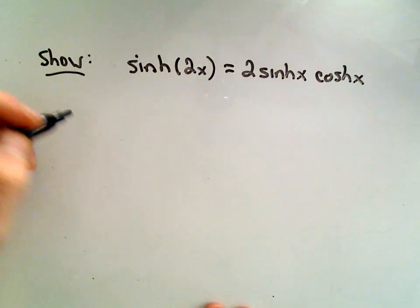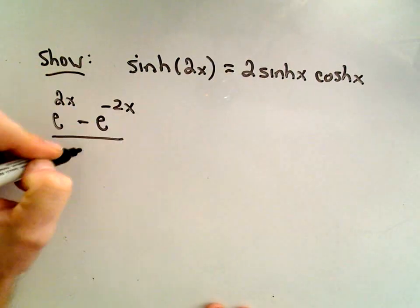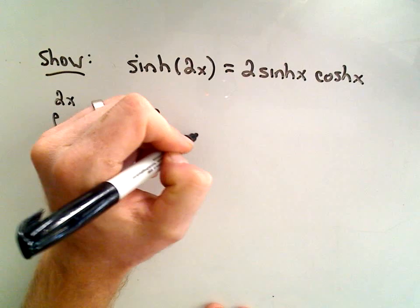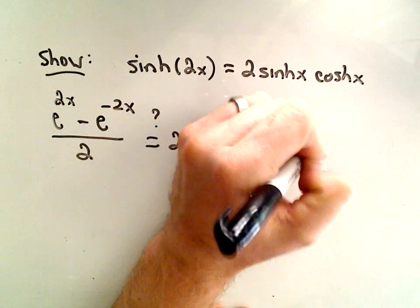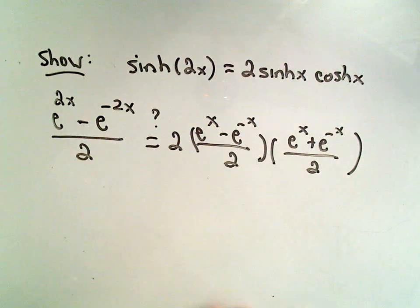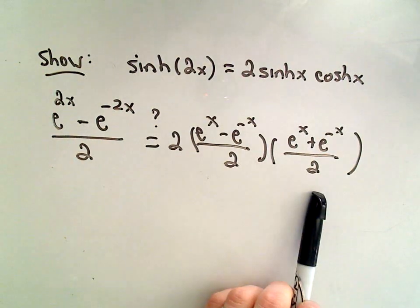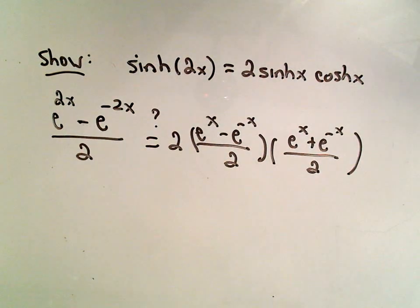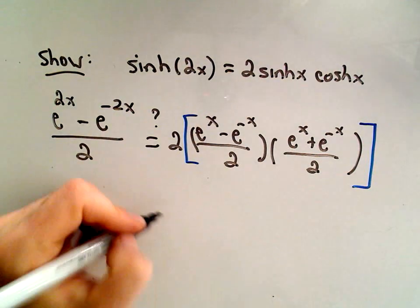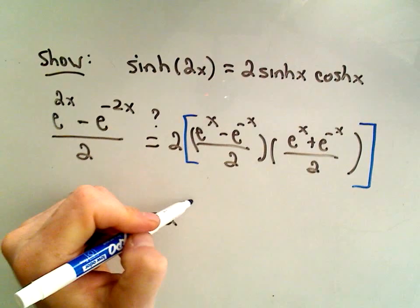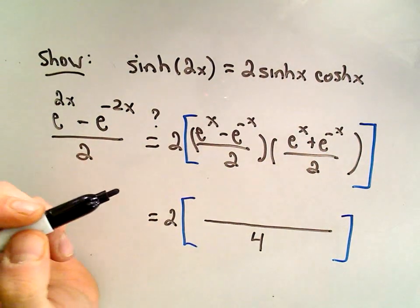Okay, so we're trying to show that hyperbolic sine of 2x, that means we have to show, does e to the 2x minus e to the negative 2x over 2, that would be hyperbolic sine of 2x, does that equal 2 times e to the x minus e to the negative x over 2, times e to the x plus e to the negative x over 2. That's what we're trying to justify here in this case. So again, you could start with the left side and try to bust it up and make it look like the right. I'm going to work on the right-hand side and see if I can't make it look like the left-hand side. So the first thing I'm going to do here is, I could immediately cancel out some 2s, I'm not going to just yet. I'm going to foil out this stuff inside.